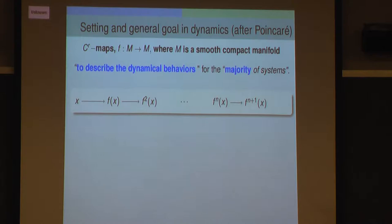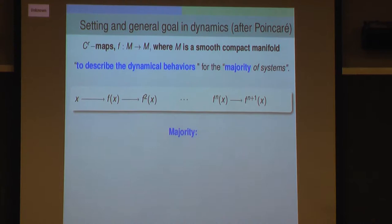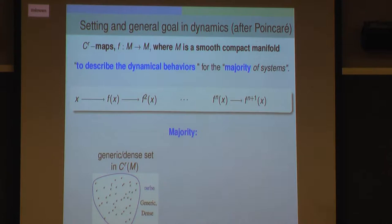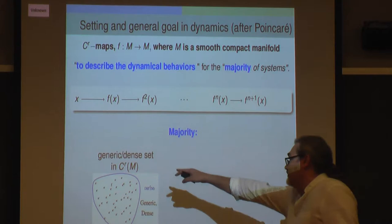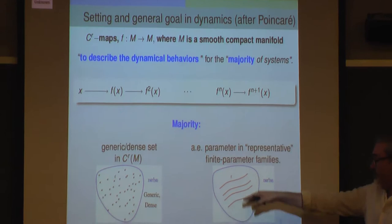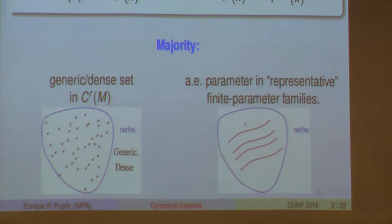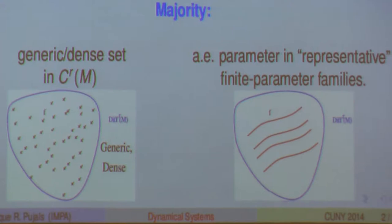You have a map, you take an initial condition, and you iterate the map. You would like to say something about the asymptotic behavior of this trajectory: where are the accumulation points, if there are attractors, if the trajectory is periodic. It's truly ambitious to say something about all trajectories, at least for the majority. The majority is sometimes approached topologically—you put the set of diffeomorphisms and describe a generic or dense set.